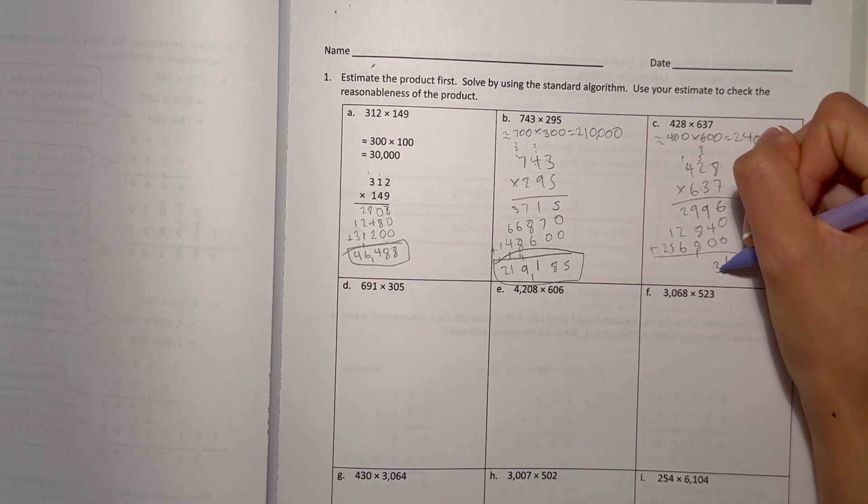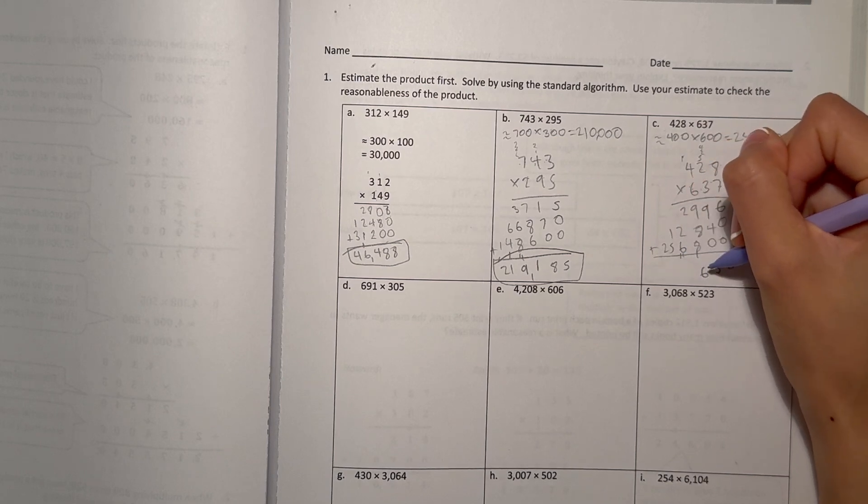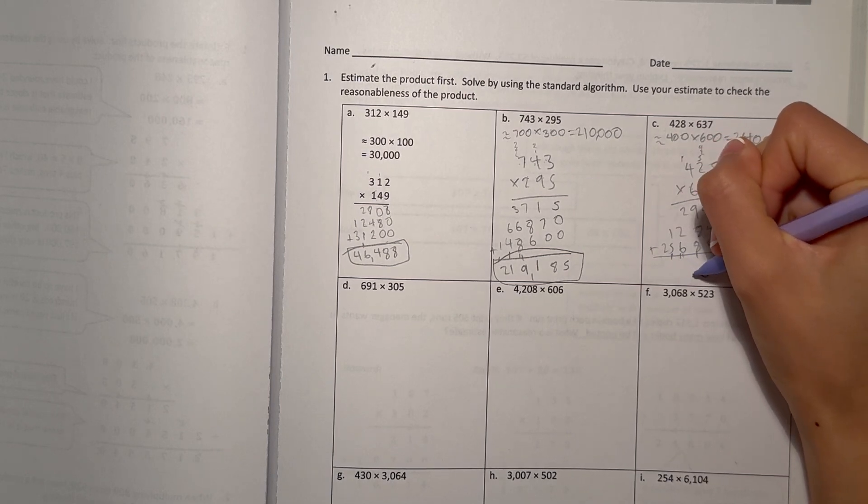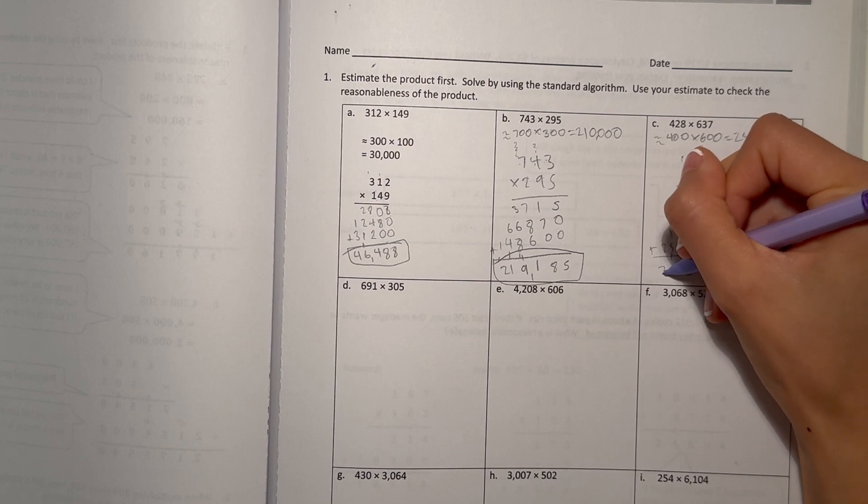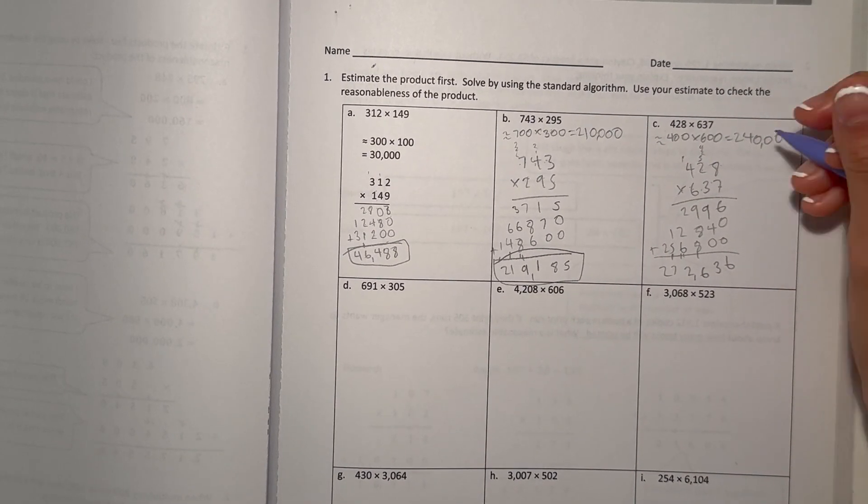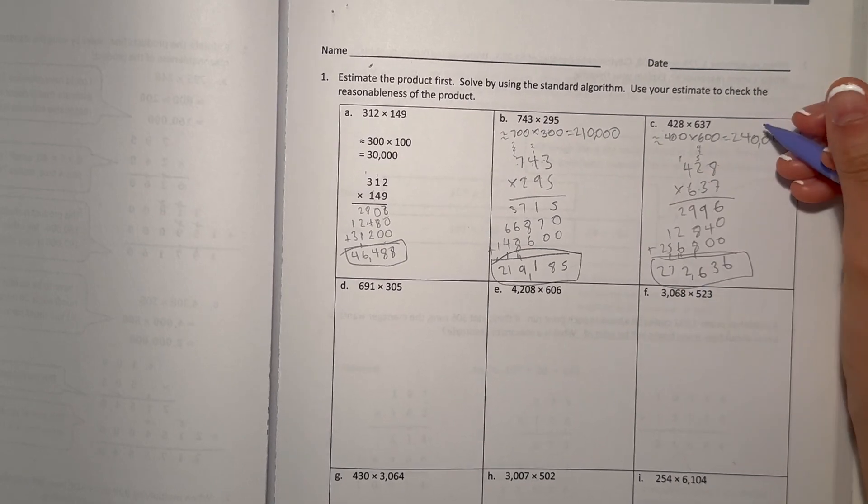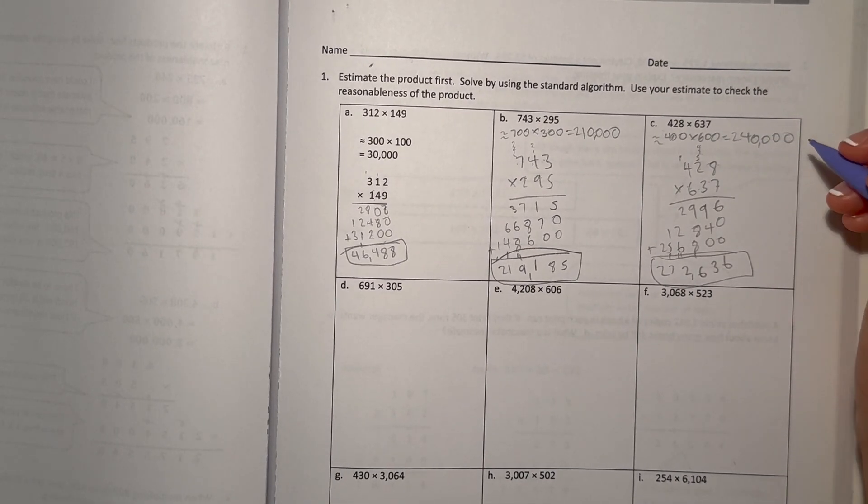Let's add. 36. 12. 72. 232,636. That's our answer is reasonable.